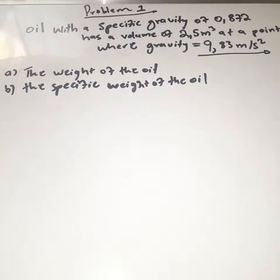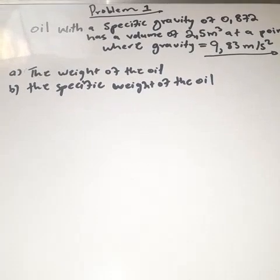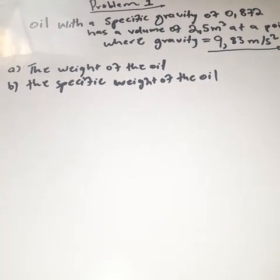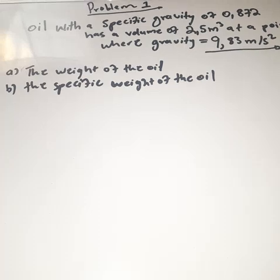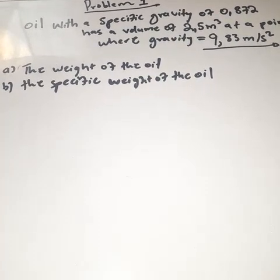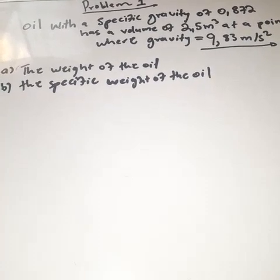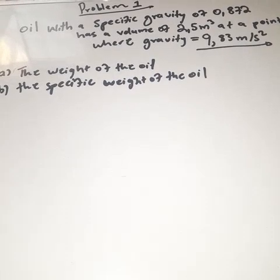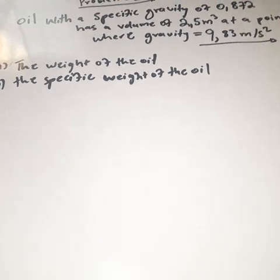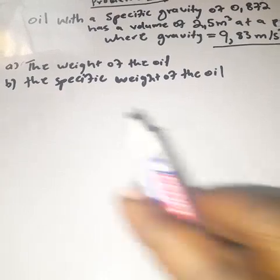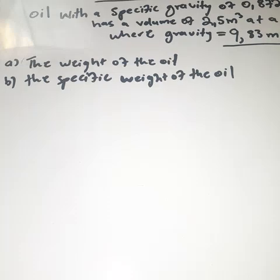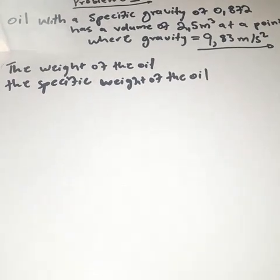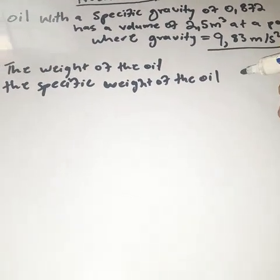How are you guys? We're still looking at properties of fluid, and now we're solving the problem — we're applying what the definition tells us. Problem one reads: oil with a specific gravity of 0.872 has a volume of 2.5 cubic meters. The first question asks us to determine the weight of the oil, and the second asks for the specific weight of the oil.